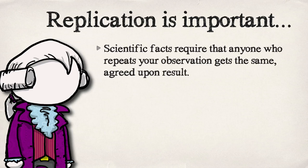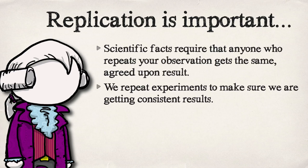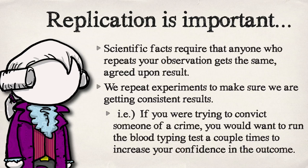If you've ever taken any science you know that you don't just do something once. You get 10 trials, 20 trials, 30 trials — you keep getting the same result. That's the idea of a scientific fact. That way anybody who does that gets the same agreed-upon result. That's why we repeat experiments. If you were trying to convict somebody of a crime you probably wouldn't want to do the test just once.